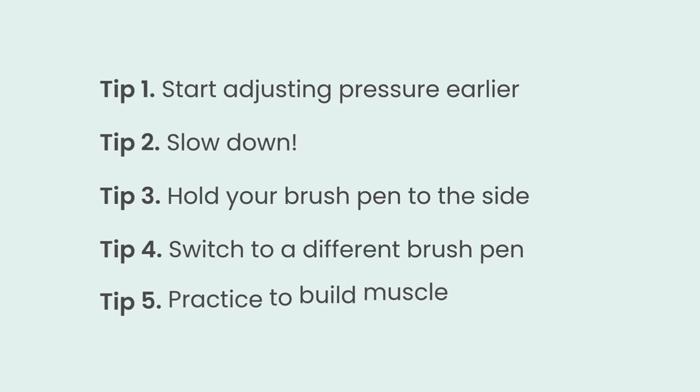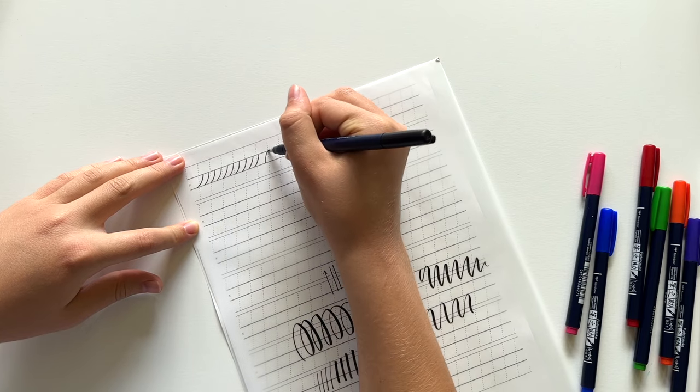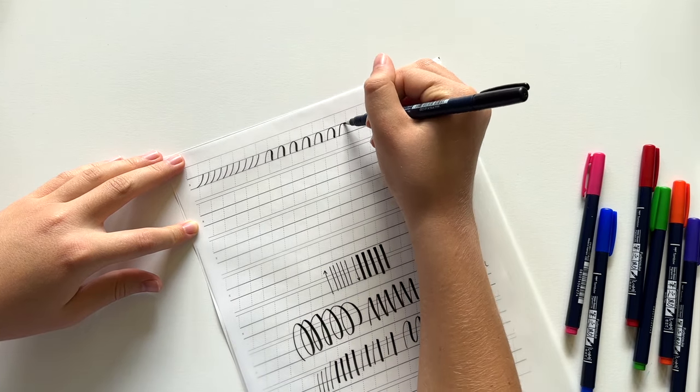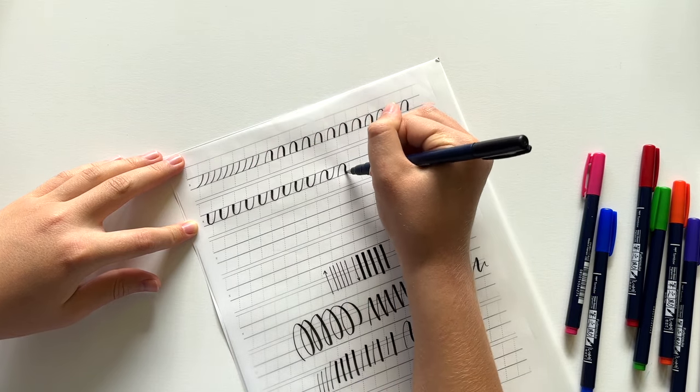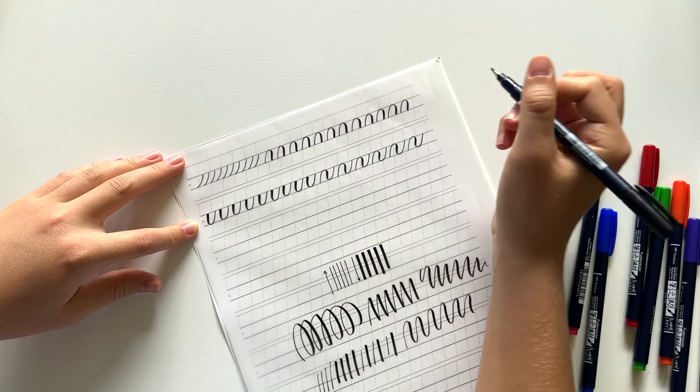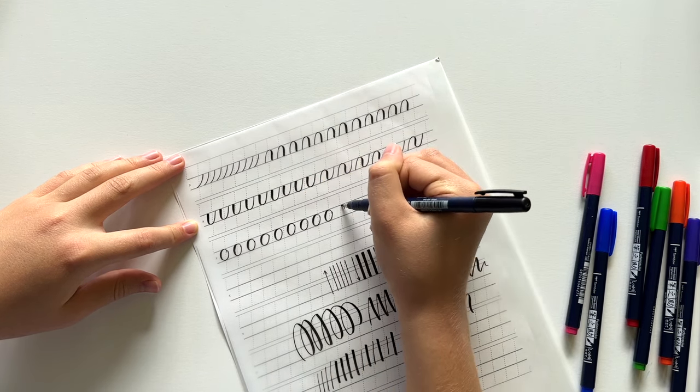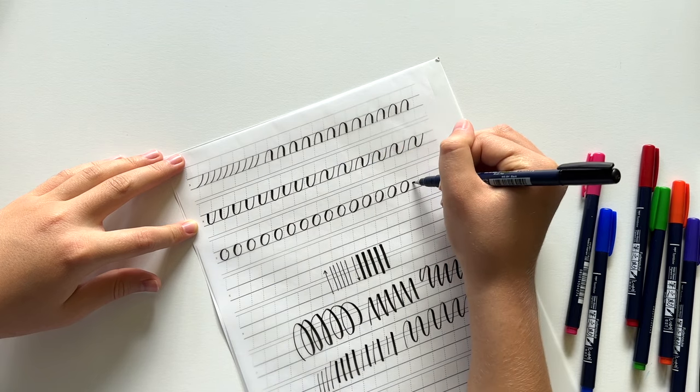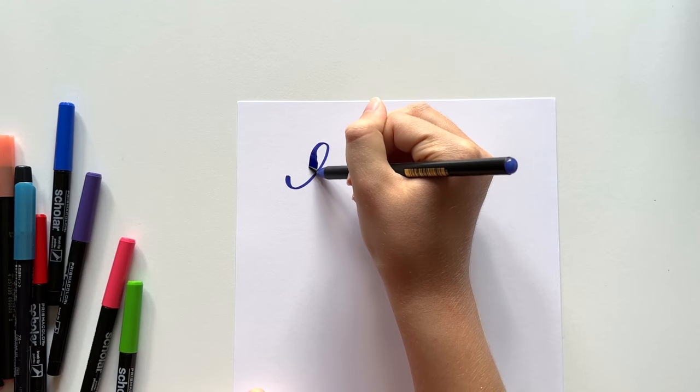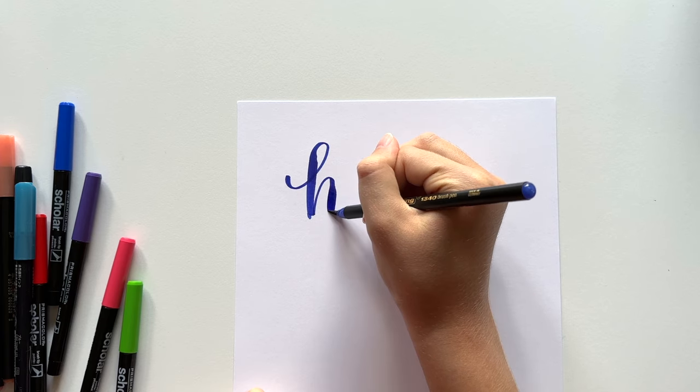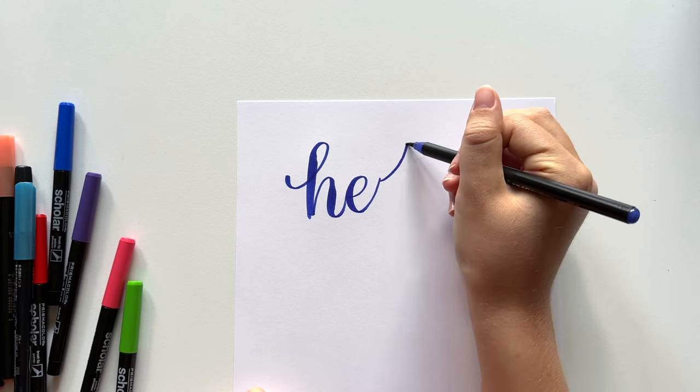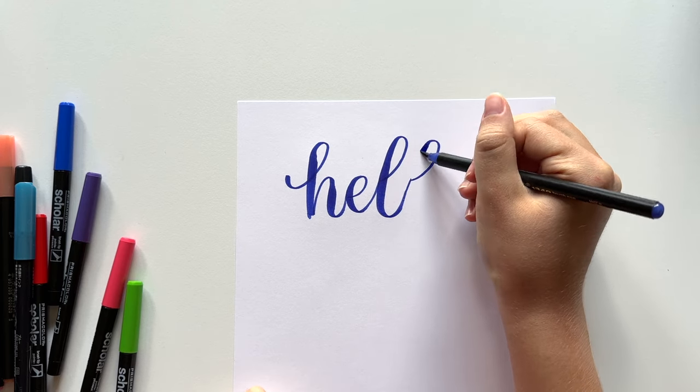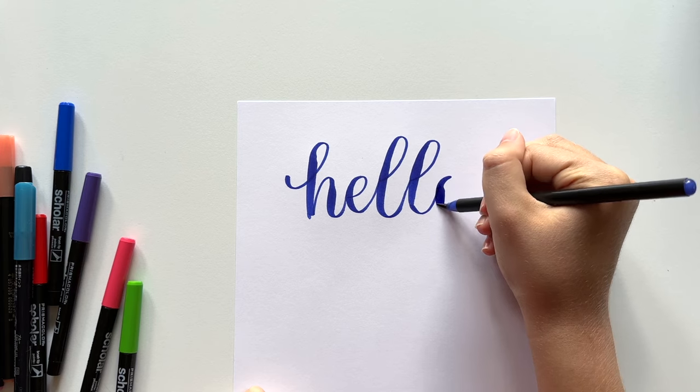Also just practice. Practice helps a lot because the more you practice, the more you build muscle memory and the more you train your hand to make those subtle adjustments, those subtle pressure adjustments. So because I've been doing this for a while now, it just feels a lot more natural to my hand. But if you haven't been doing this for as long, you'll want to practice more to practice making those adjustments smoothly and gradually. And over time, you will train your hand to make those adjustments so that you don't even really have to think about it. It will get a lot easier over time the more you practice.